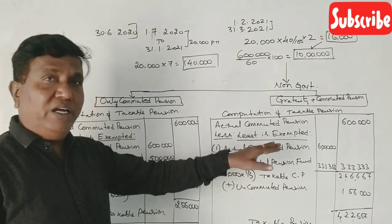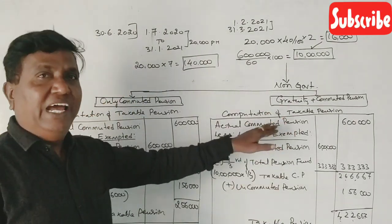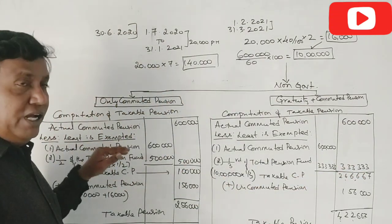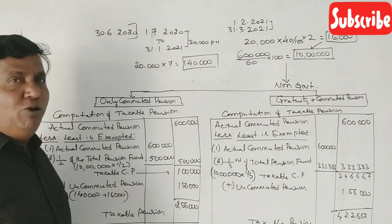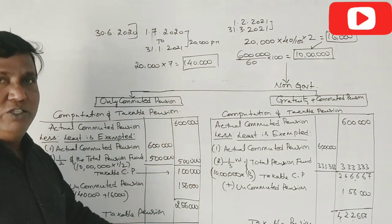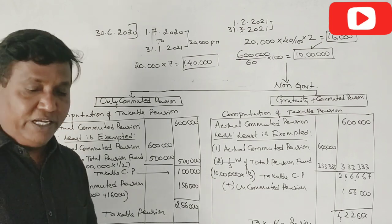If the employee is getting gratuity and also getting commuted pension, this is the taxable amount of commuted pension. Gratuity - this is problem number one. One question to practice. Okay, now.